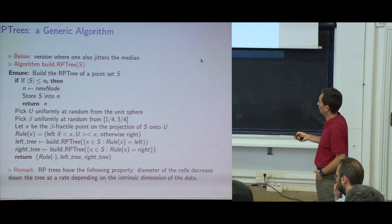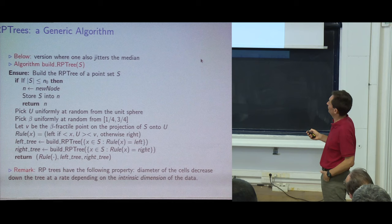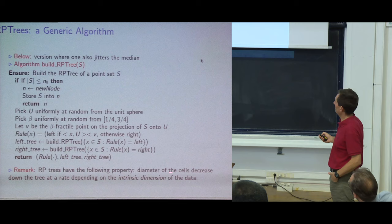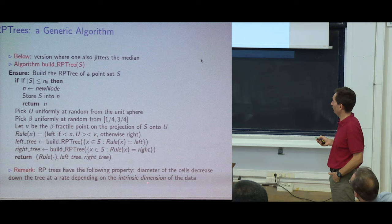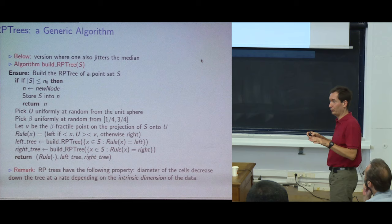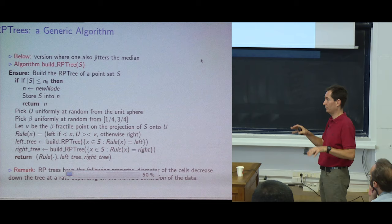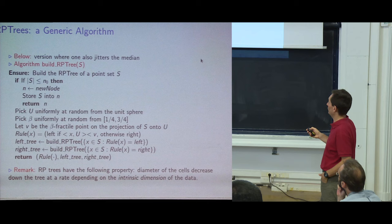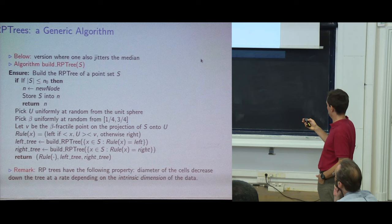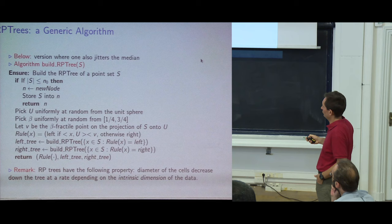An interesting remark for points on a manifold: if points lie in high-dimensional space but on a k-dimensional manifold, random projection trees (RP trees) have a useful property. Dasgupta and Freund showed that cell diameters decrease down the tree at a rate depending on the intrinsic dimension, not the ambient dimension. This is potentially useful when your data has low intrinsic dimension.